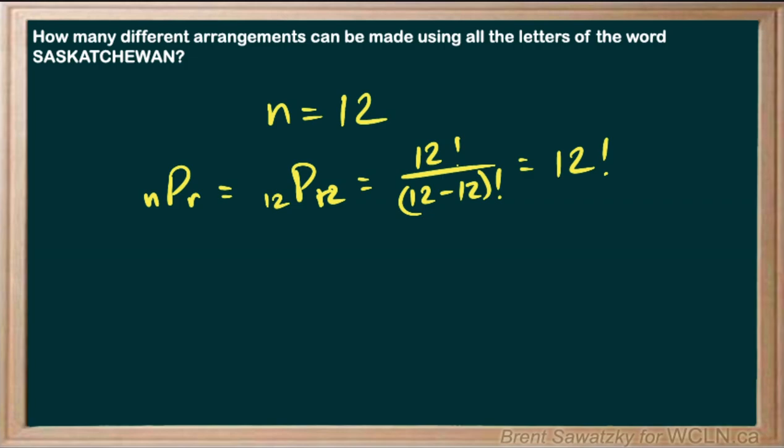Now we have to consider the repeats. Normally we would jump to 12 factorial and recognize that some of those possibilities would be the same because we have repeated letters.